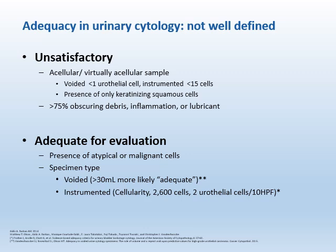First, we'll discuss adequacy in urinary cytology. The following conditions meet the criteria for unsatisfactory for evaluation: an acellular or virtually acellular sample; less than 10 urothelial cells for voided urine; or less than 15 cells for instrumented urine; or the presence of only keratinizing squamous cells; or a specimen containing greater than 75% obscuring debris, inflammation, or lubricant. The presence of any atypical or malignant cells is adequate for evaluation. For voided urine, greater than 30 mL containing any urothelial cells is adequate. For instrumented urine, two urothelial cells per high-power field or 2,600 cells is adequate.